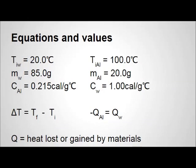Now we'll take a look at the equations and values we'll use to complete this calculation. The initial temperature of water was 20 degrees Celsius. The initial temperature of the aluminum was 100 degrees Celsius. The mass of the water is 85.0 grams, which is 85.0 milliliters. The mass of the aluminum is 20.0 grams. The specific heat capacity of aluminum is 0.215 calories per gram degree Celsius, and for water it is 1.00 calories per gram degree Celsius.